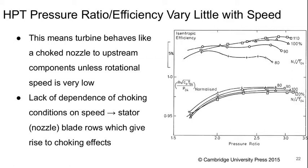Now let's spend the rest of the time talking about turbines, starting with the high pressure turbine. The high pressure turbine's pressure ratio and efficiency vary very little with changes in rotational speed. The performance map of a turbine is normally plotted differently — we put pressure ratio on the horizontal axis and non-dimensional mass flow as well as efficiency on the vertical axis.